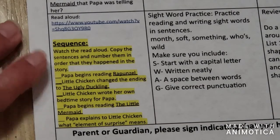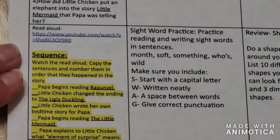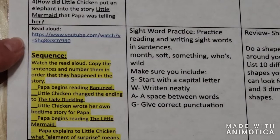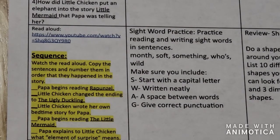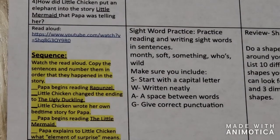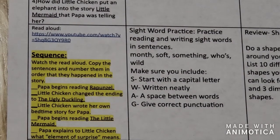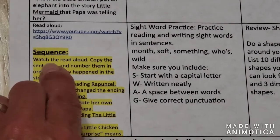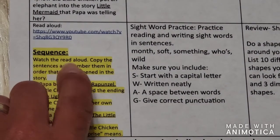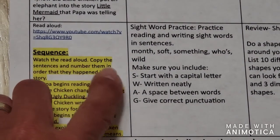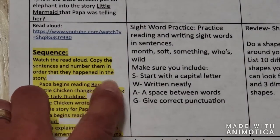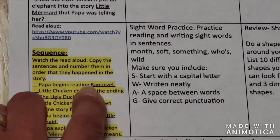Our last one here is going to be: you're going to listen to the read-aloud of 'Interrupting Chicken and the Elephant of Surprise,' and you have a sequence, which means you're going to put things in order. The instructions read: watch the read-aloud, copy the sentences, and number them in the order that they happened in the story.